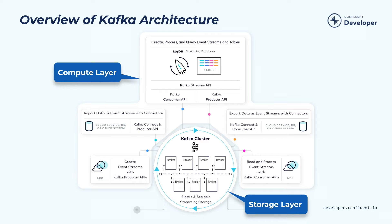We have two primitive APIs for accessing the data stored in the storage layer. One is the Produce API, which allows people to publish events into the storage layer. The other is the Consumer API, which allows applications to read those events from the storage layer. On top of that, we build two higher-level APIs.